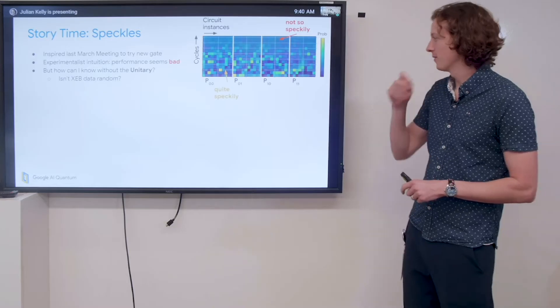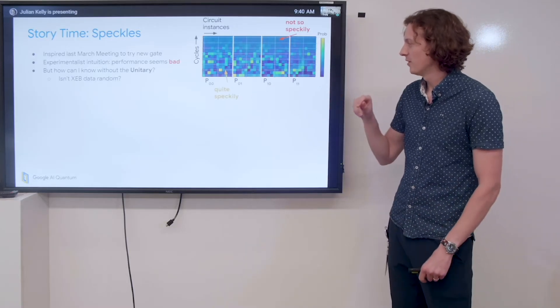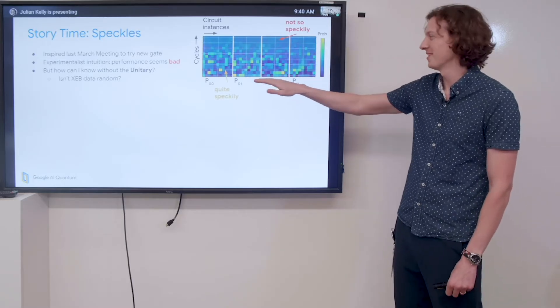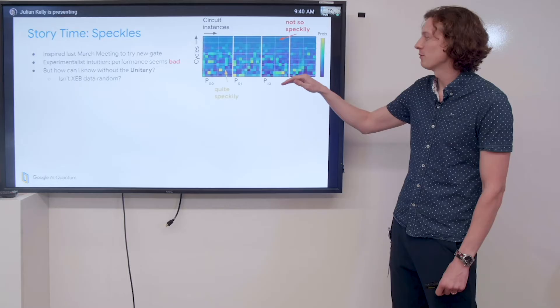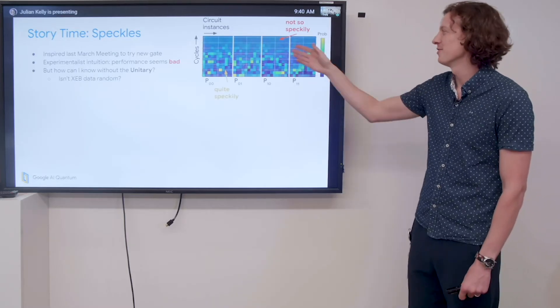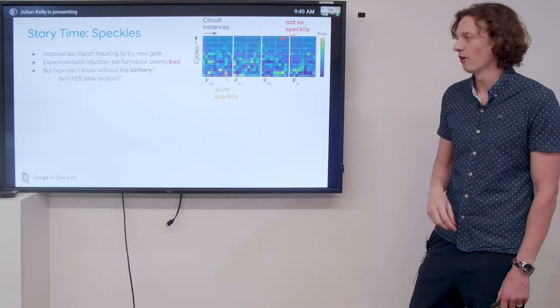When I was looking at the raw XEB data, I noticed that for a low number of cycles, the data looked quite speckly, and I was pretty happy with the amount of speckliness down here. But when I went to a high number of cycles, I noticed these speckles started to wash out. I found the degree of speckliness to be a little bit disappointing, not so speckly.